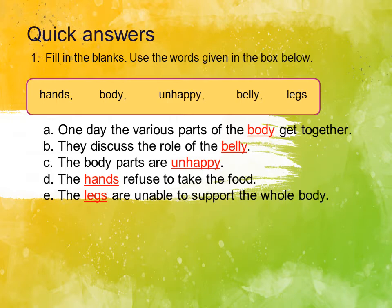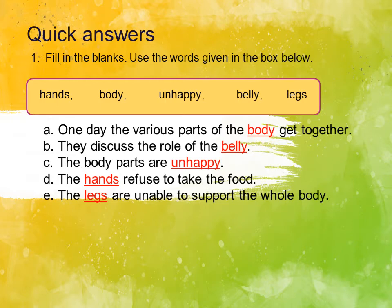D: The dash refused to take the food. Who refused to take the food? When the body parts discuss, they decide they are not going to feed the belly anymore. The hands refused to take the food. E: The dash are unable to support the whole body. The legs are unable to support the whole body. The legs are the part which supports the whole body, so the answer is: the legs are unable to support the whole body.